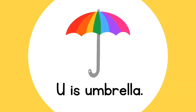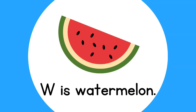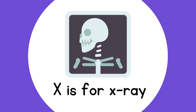U is for Umbrella. V is for Vase. W is for Watermelon. X is for X-Ray.